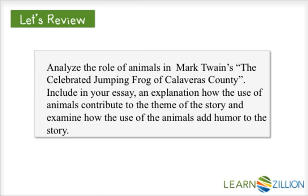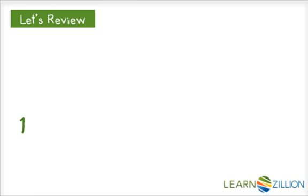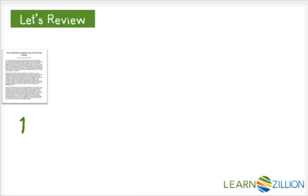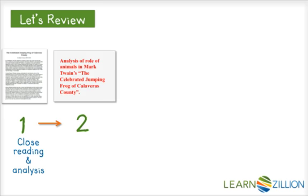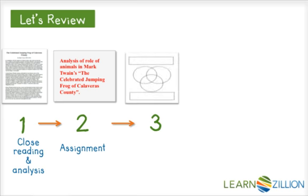We know we're going to use the writing process to answer this prompt. The first step in writing is to show your comprehension of a text — always do multiple close readings and analysis of the text. The second step is to read the assignment and figure out what it is asking you to write about. Remember, this assignment is an explanatory writing assignment. The third step is where we generated our idea for what we want to say about the text and made a plan for how we want to write it.